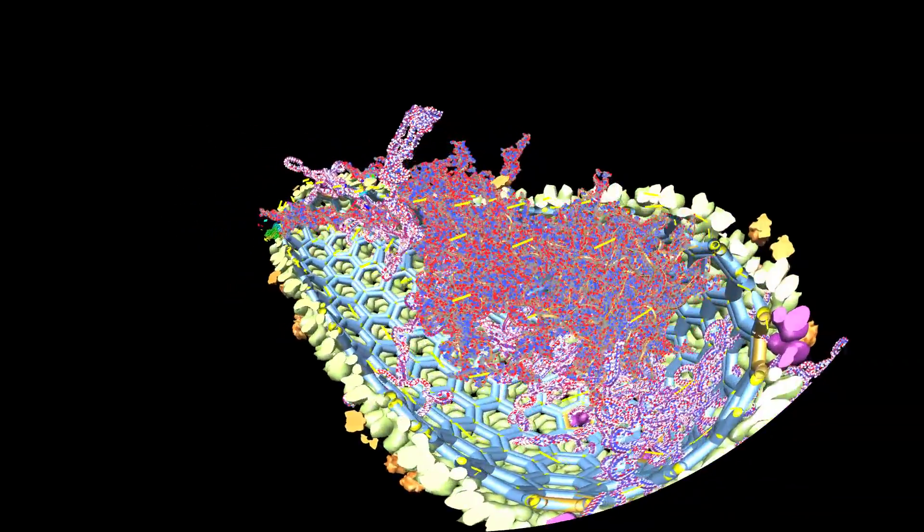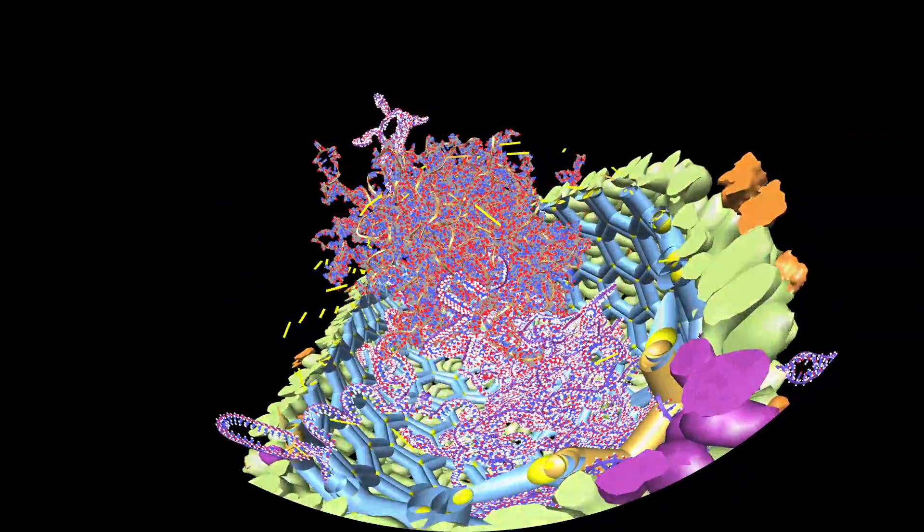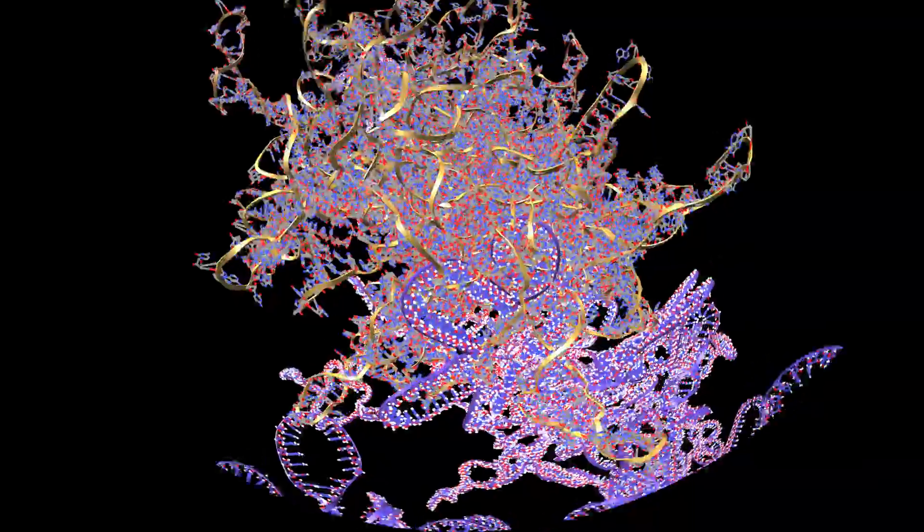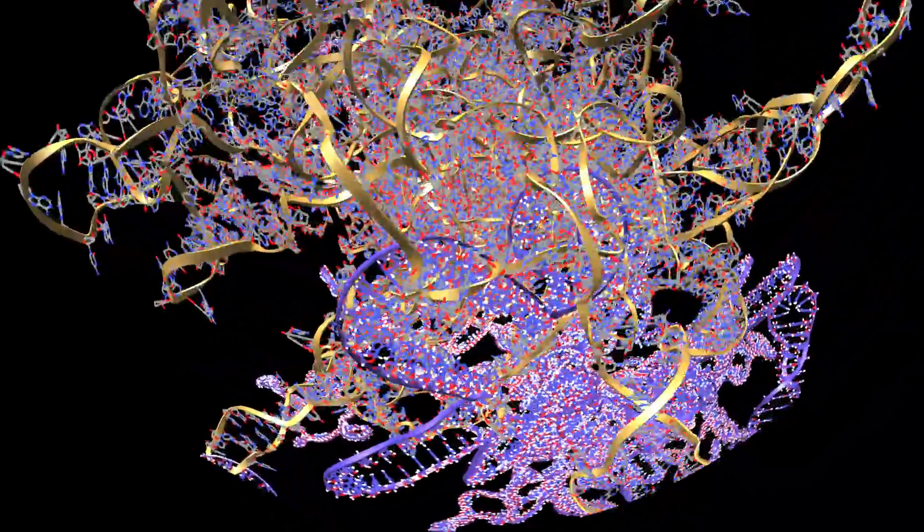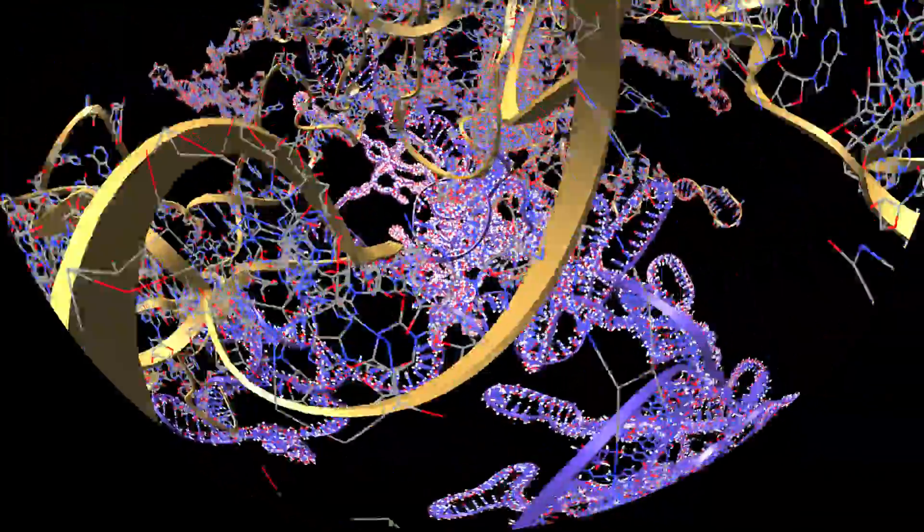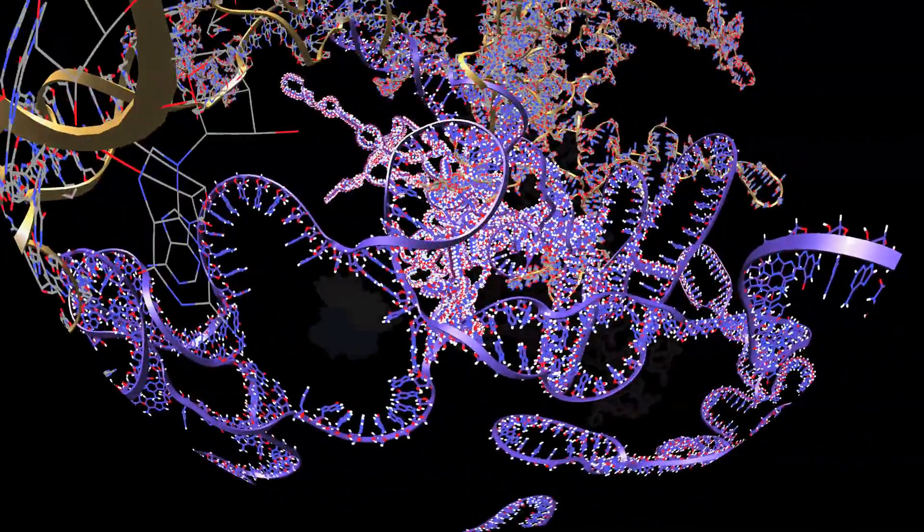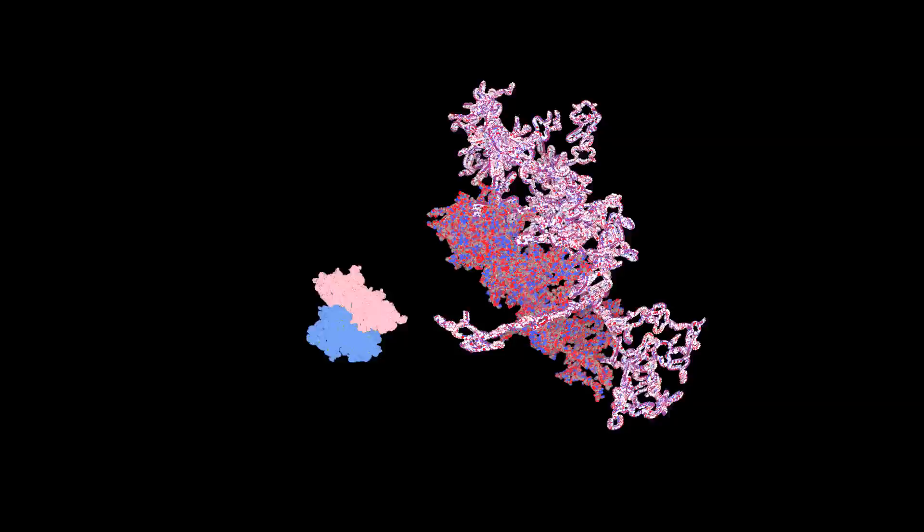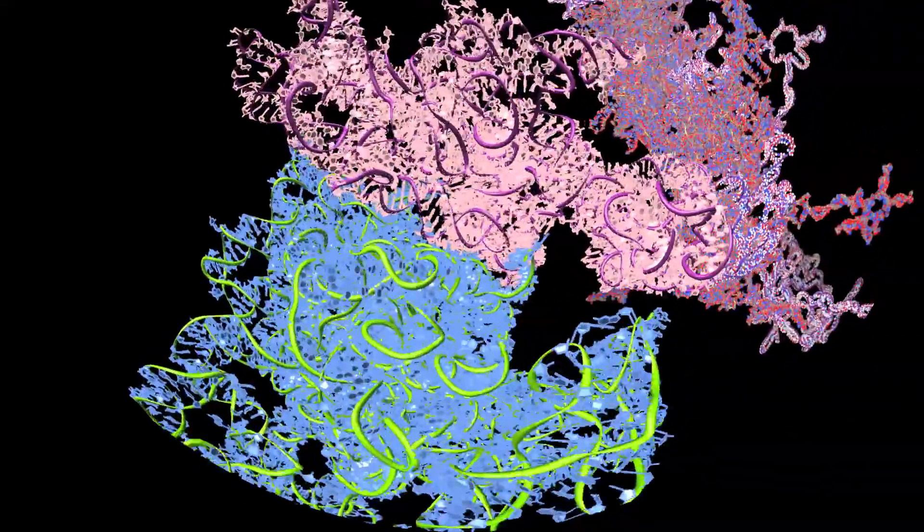An HIV virus contains two copies of its RNA. Comparing sizes, HIV RNA is twice as long as the RNA in a ribosome.